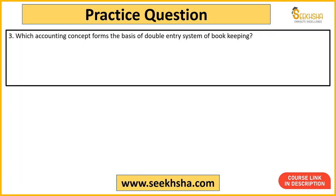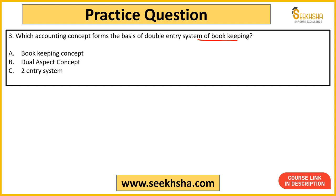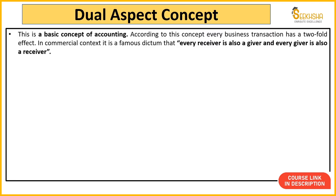Next question: Which accounting concept forms the basis of the double entry system of bookkeeping? Option A: Bookkeeping Concept, B: Dual Aspect Concept, C: Two Entry System, D: None of the above. Again, very simple basic question. Double entry system — accounts mein har transaction ka effect double aapko dikhega. Isko hum kehte hain Dual Aspect Concept.